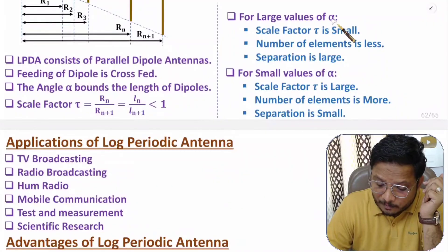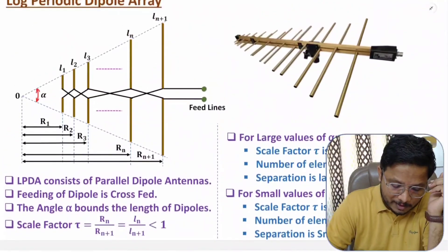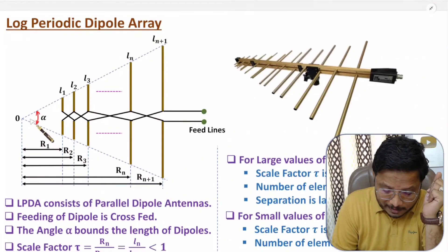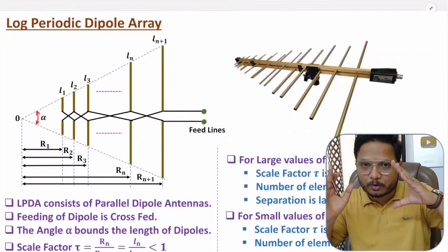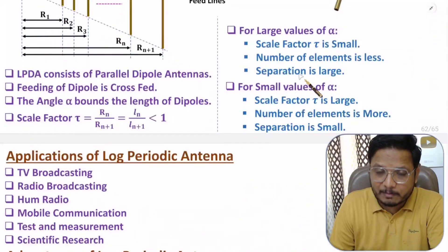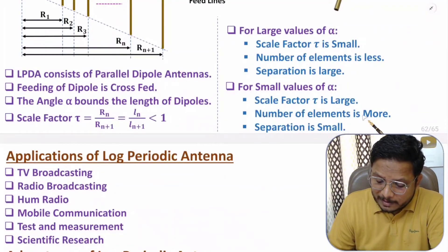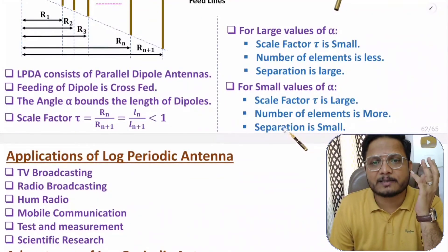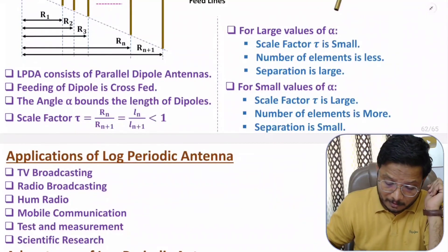If you have a large value of alpha, the number of elements will be less and the separation between elements will be large. With a small value of alpha, you can have more elements and less separation between them. These are the key parameters to keep in mind when designing a log periodic antenna using a dipole array.